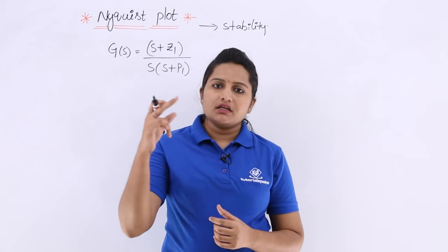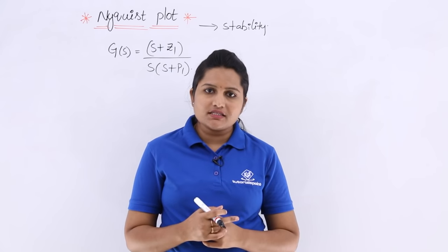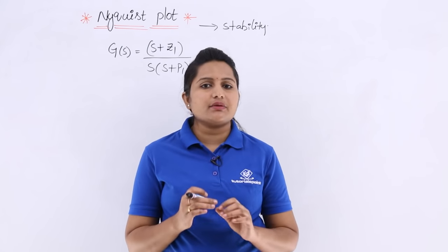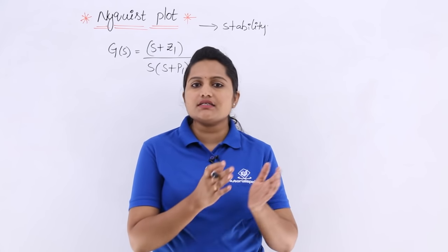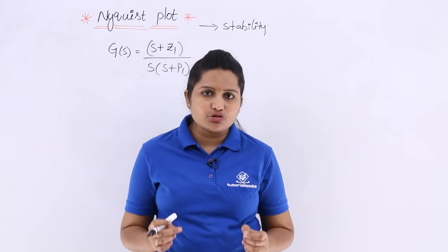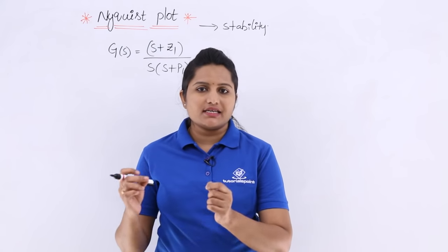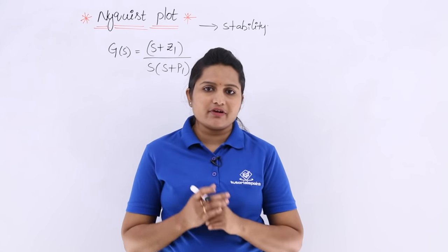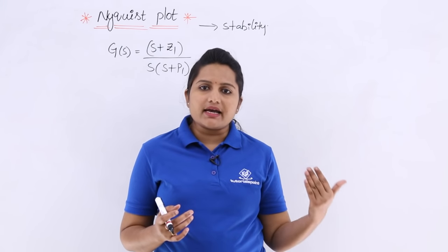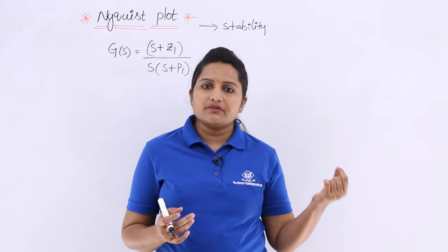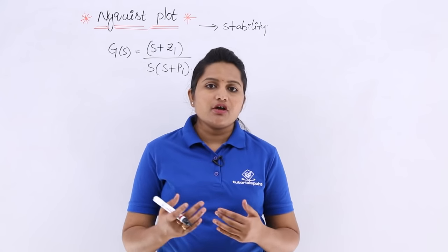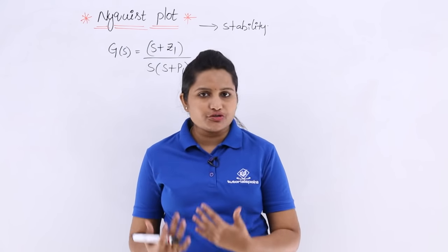So we are observing the magnitude and phase of an open loop transfer function from minus infinity to infinity. This is the only difference; the rest remains the same as the polar plot. In polar plots we take the plot from omega equal to 0 to infinity, whereas in Nyquist plots we take the plot from minus infinity to infinity.